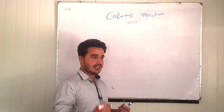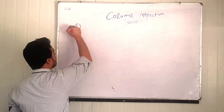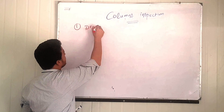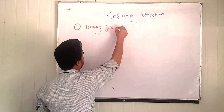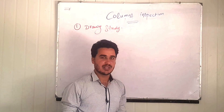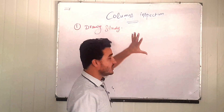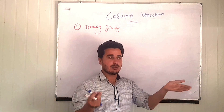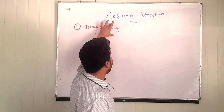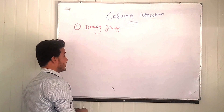The first checklist point for the column inspection process is to study the drawing. This is the basic rule for all types of inspection — whether you are inspecting beams, columns, slabs, or foundations. Without studying the drawing for that specific member, you cannot verify whether it matches the design. So always study the drawing before the inspection process.